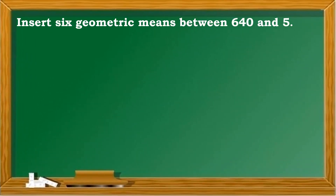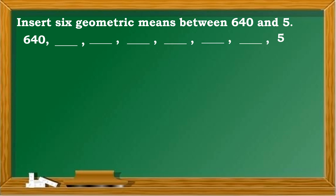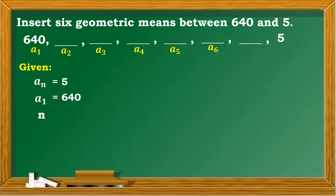Next example: Insert 6 geometric means between 640 and 5. Identify the given. a sub n, the last term, is 5. The first term is 640. Counting the terms: 640 is the first term, followed by six inserted means, then 5 as the eighth term. Therefore n equals 8, and r is unknown.